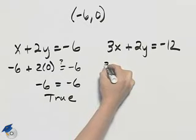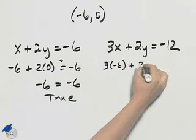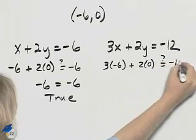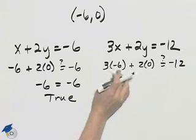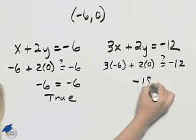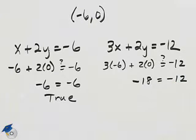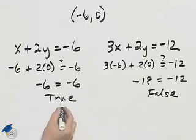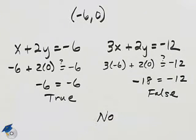In the second equation, I have three times negative six plus two times zero. We want to see if that's equal to negative twelve. Two times zero is zero, and three times negative six is negative eighteen. So I end up with negative eighteen equal to negative twelve, which is false. Because we don't obtain two true statements, this is not a solution to this system.